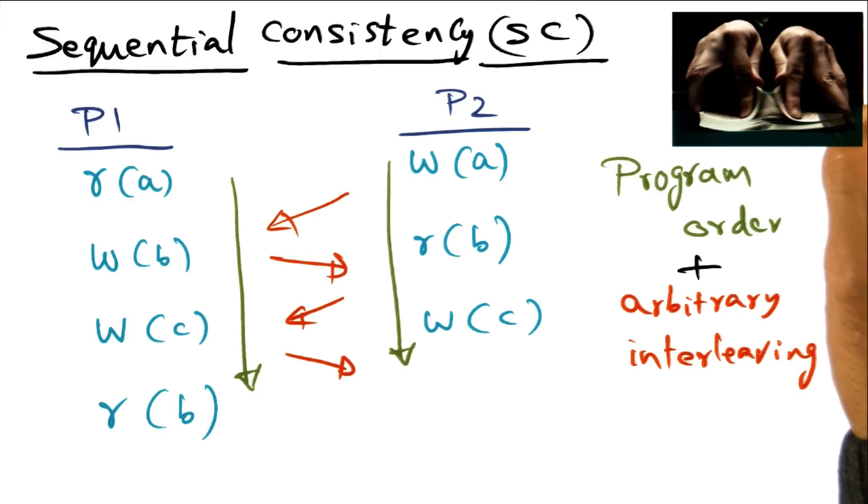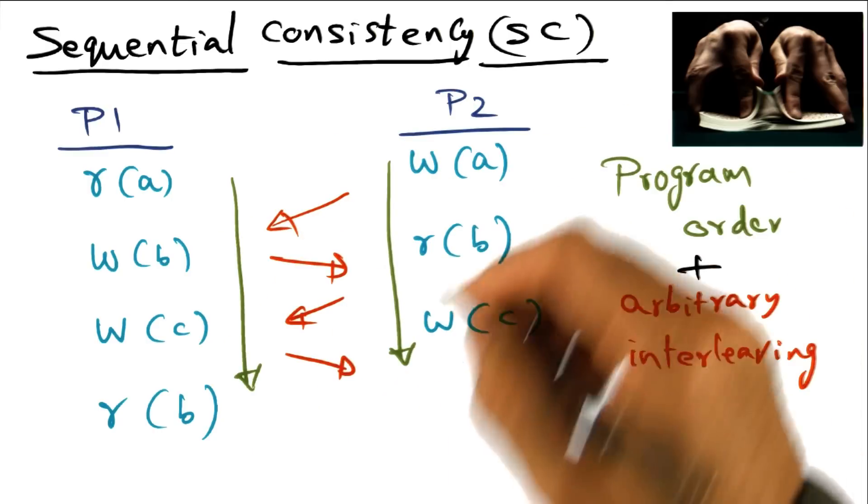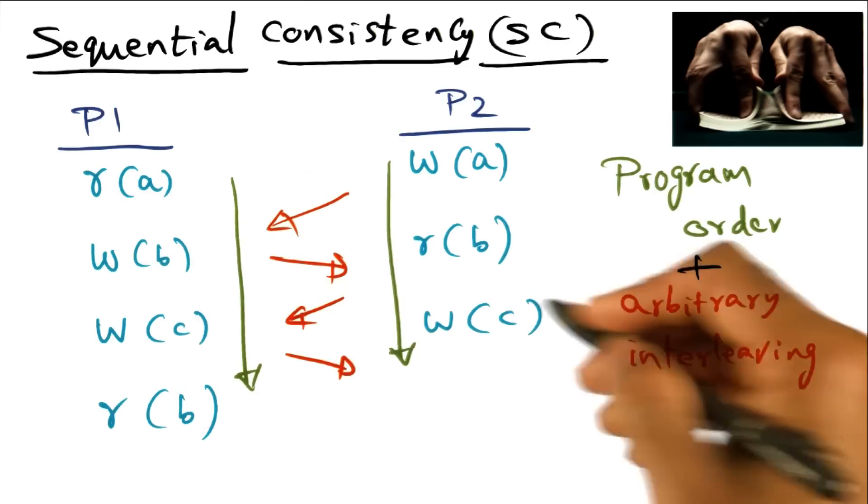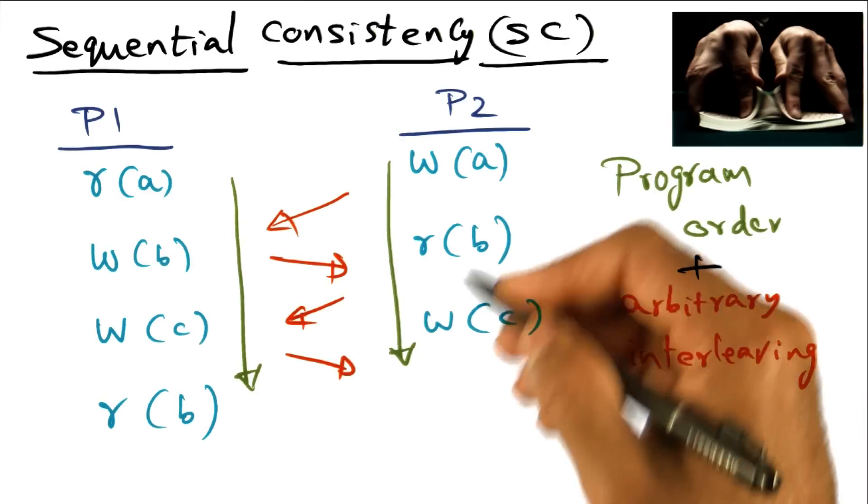And I also gave you the analogy of a card shark to illustrate what is going on with the sequential memory consistency model. So the card shark is taking two splits of a card deck and doing a perfect merge shuffle of the two splits. And that's exactly what's going on with sequential consistency.